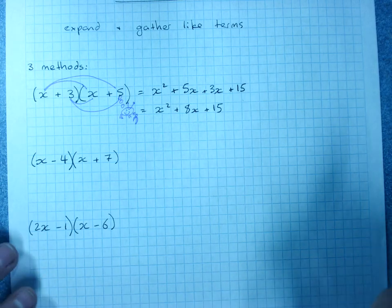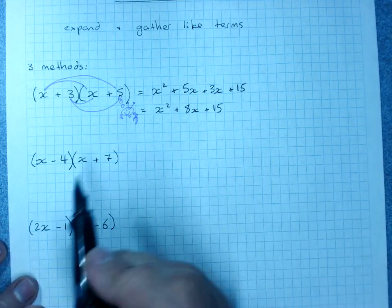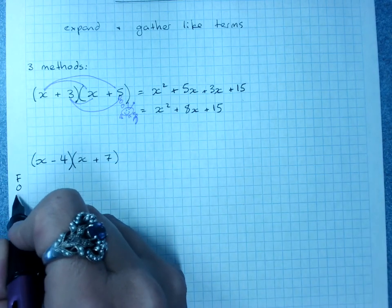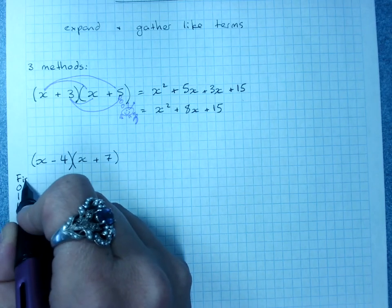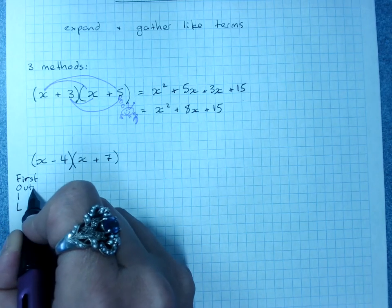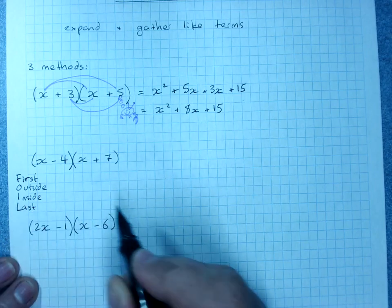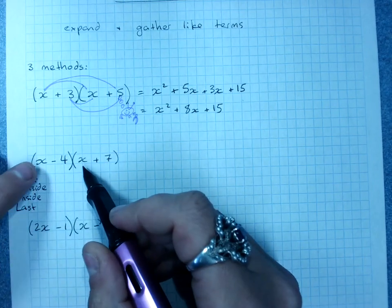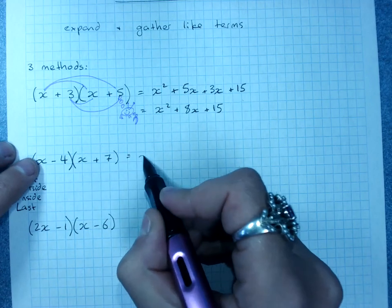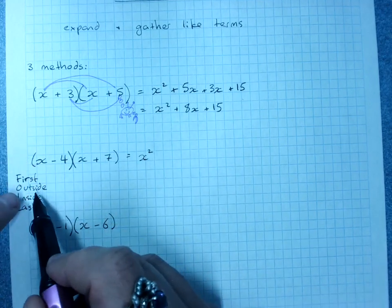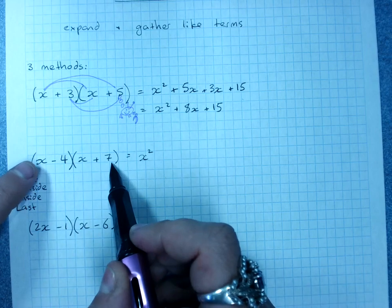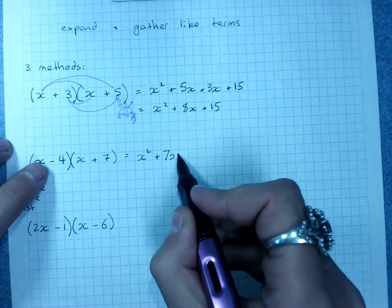One method that gets taught is FOIL. First, outside, inside, last. Multiply the two first terms together. x times x is x squared. Multiply the two outside terms together. x times 7, plus 7x.